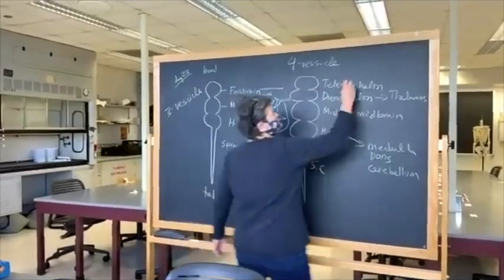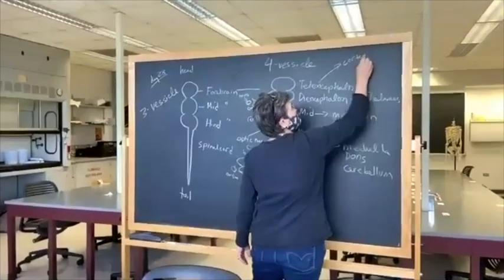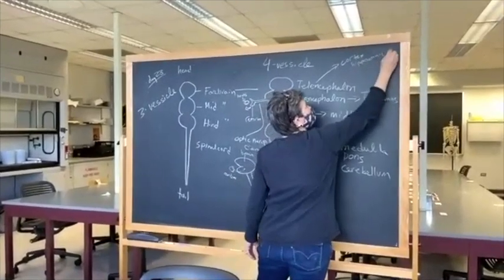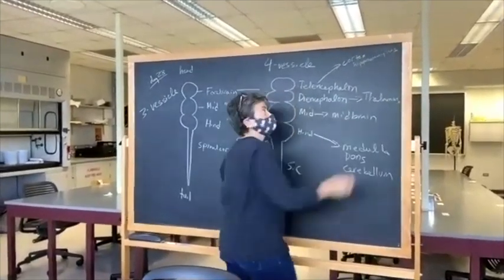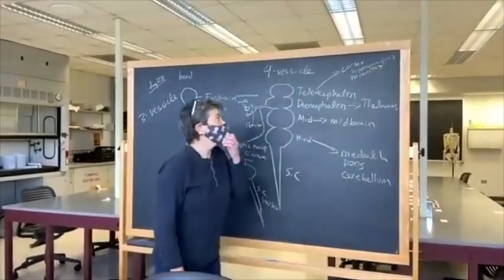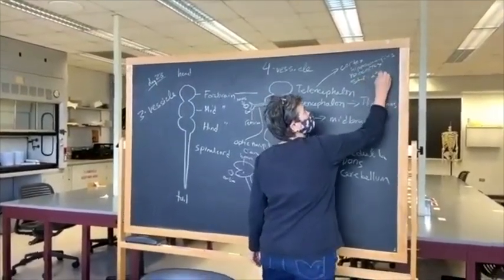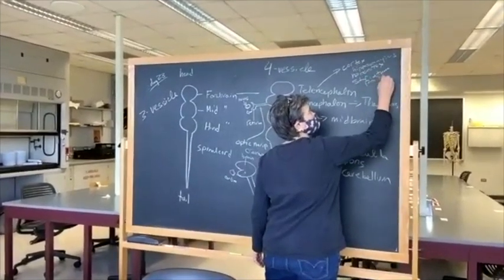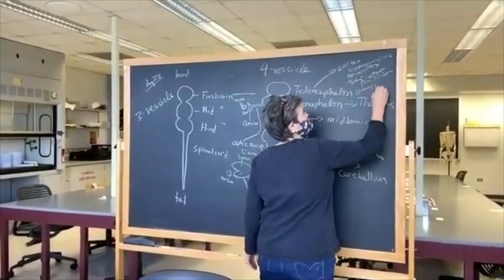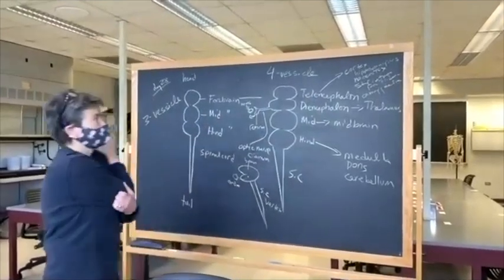The telencephalon is going to become cortex, which has two big pieces. One is called the hippocampus — that's a three-layered cortex. And then neocortex, which is only found in mammals. It also has the core structures of the basal ganglia, which are the striatum and the pallidum, and it has a structure called the amygdala.